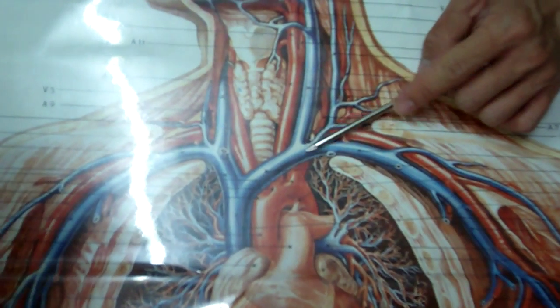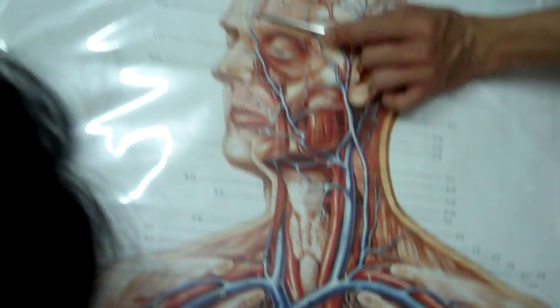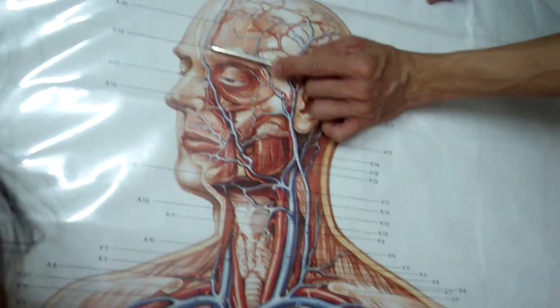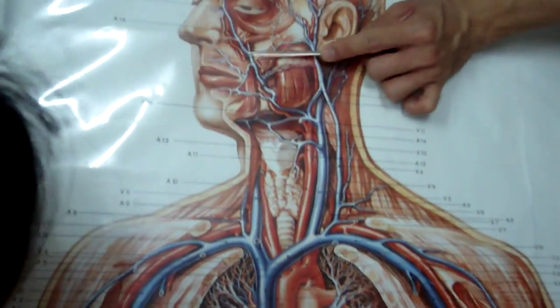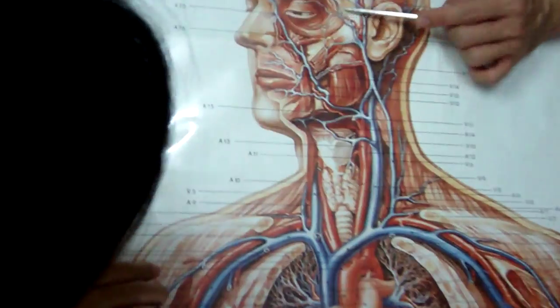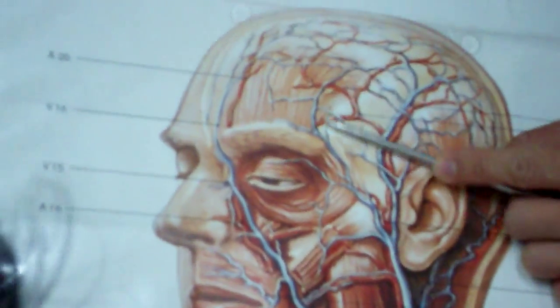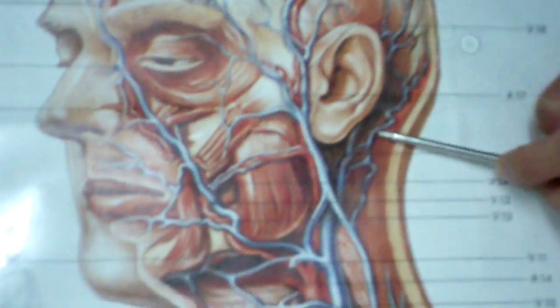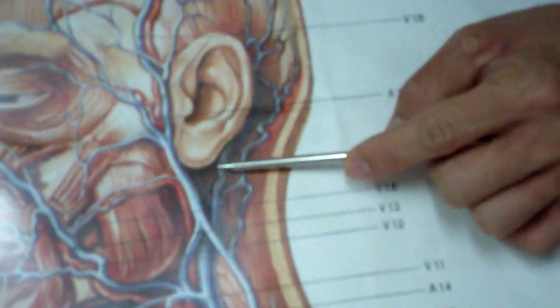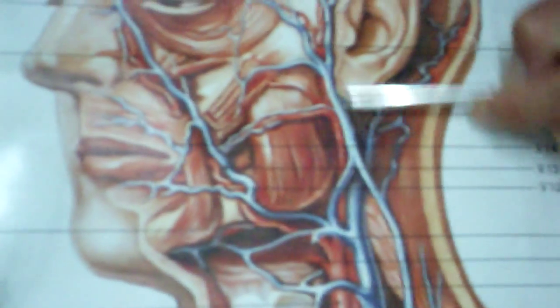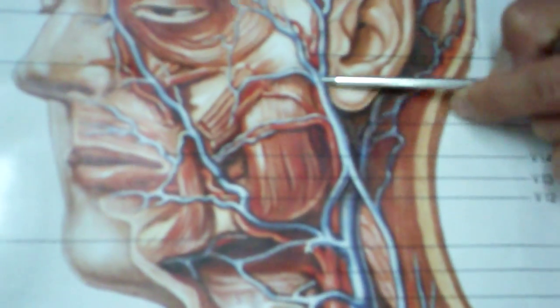Next, veins. So, supratrochlear vein, and this would be your facial vein, the vertebral vein, and here's the occipital vein. Behind the ear, so you have your posterior auricular vein, and behind the mandible you have your retromandibular vein.